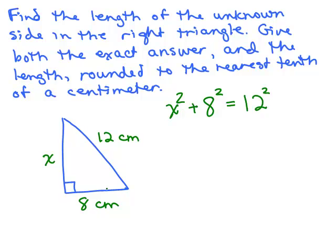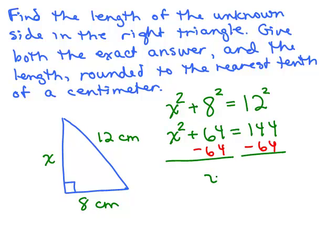Also I have not drawn this to scale, so you can't really tell from the picture which is longer. It looks like X is longer but that's not necessarily true. So we've got X squared plus 64 equals 144, and then we subtract 64 from both sides and that gives us X squared equals 80.